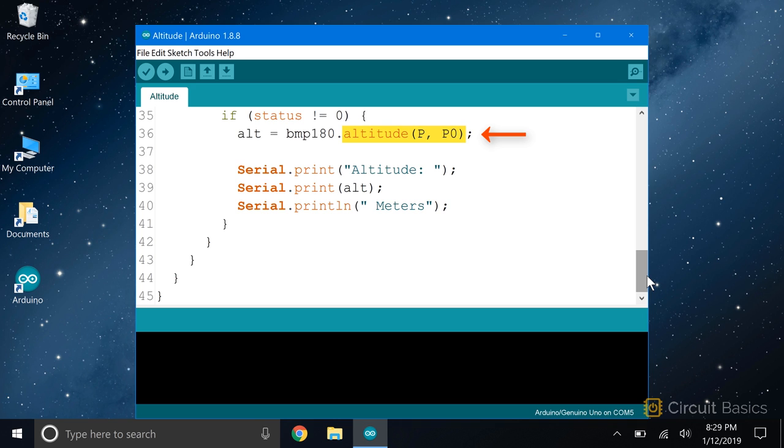In the last if statement, we use the altitude function that comes with the BMP180 library. This function takes two arguments. The first argument is P, the pressure measured by the BMP180. The second argument is P0, which is either your ground level pressure or your sea level pressure, depending on where you want the altitude measured from.